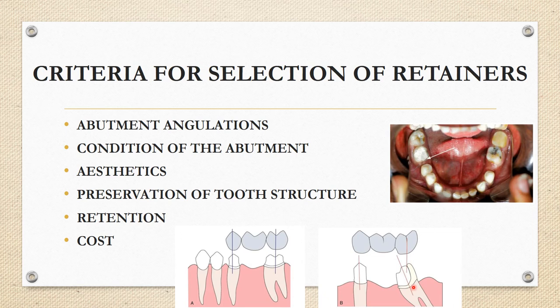When abutments are non-parallel due to unfavorable tooth position, a partial veneer retainer can be used along with another partial or full veneer retainer to achieve a single path of insertion. Path of insertion refers to how you place and remove the prosthesis — you want a single path. If the abutment angulation is tilted, a partial veneer crown is used.